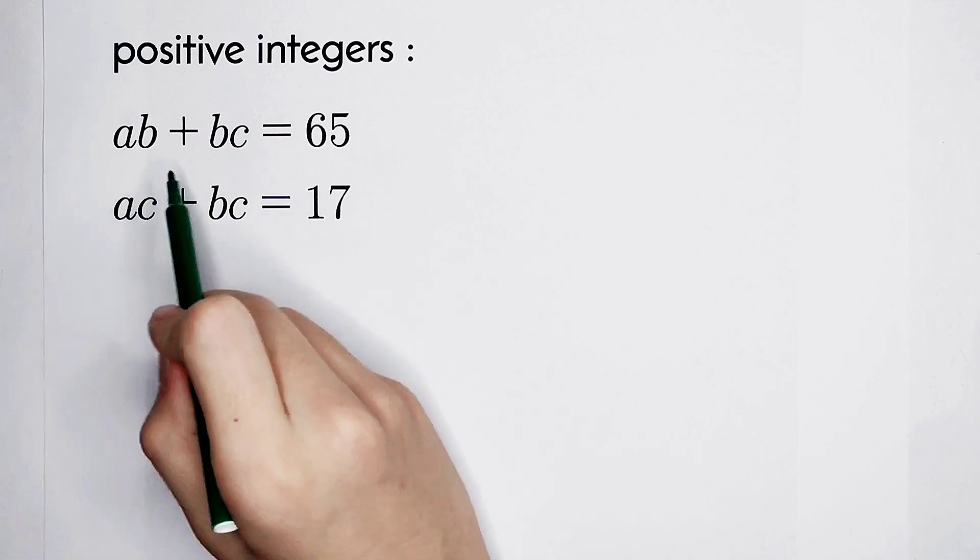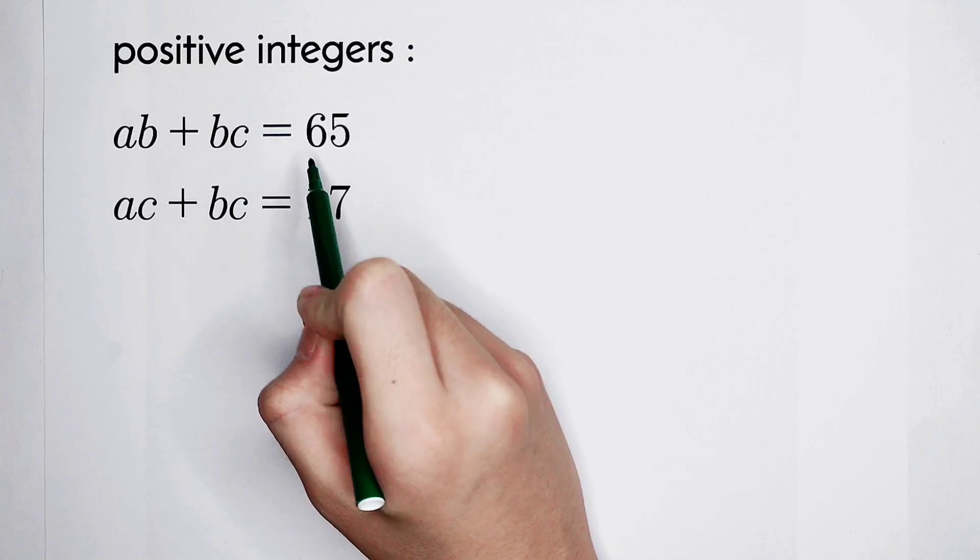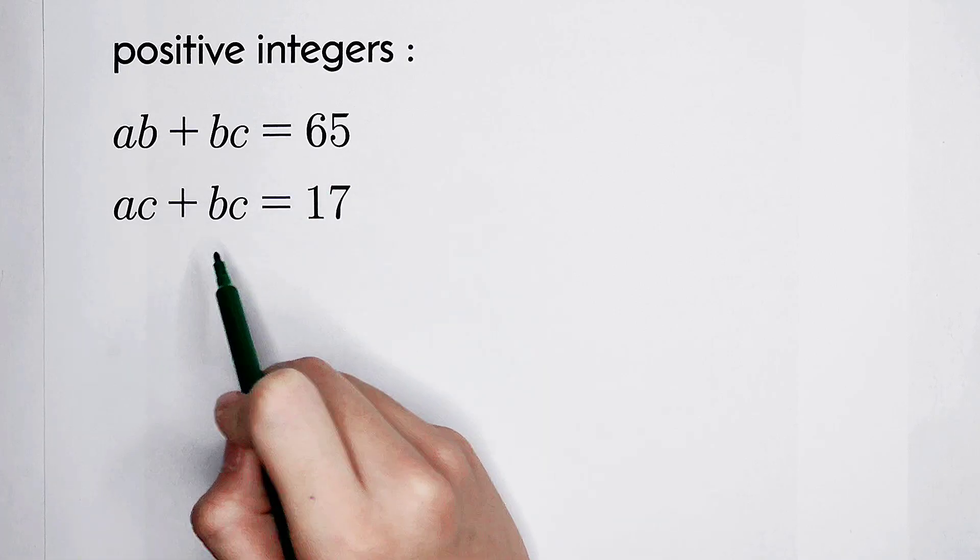Solve the positive integers a, b, and c such that ab plus bc is equal to 65, and ac plus bc is 17.